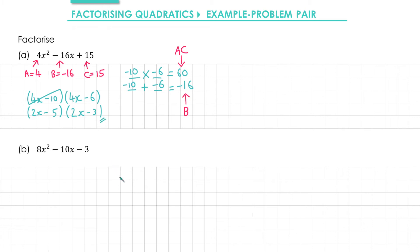Let's apply the same method to b. We want two numbers that multiply together to make a times c, in this case 8 times negative 3, which is negative 24. The same two numbers need to add together to make b, which is negative 10. This time the numbers we want are negative 12 and positive 2.